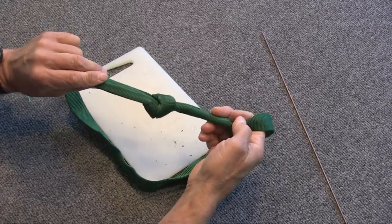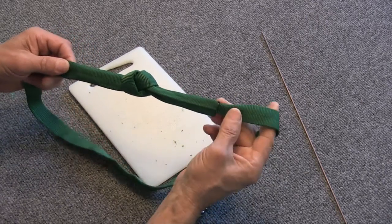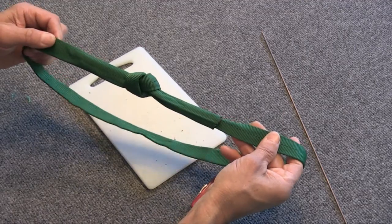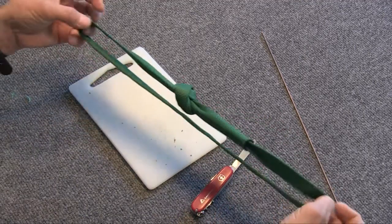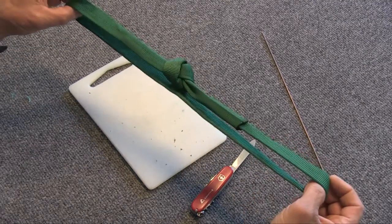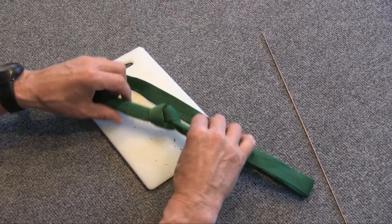And there is the finished beer knot. The harder you pull on this the tighter it'll get. It's very neat looking knot because you don't have any tails flopping around. If you do it right you won't have any twists in your webbing. It'll be nice and neat like that. So that is a beer knot.